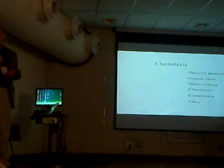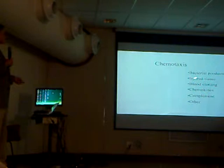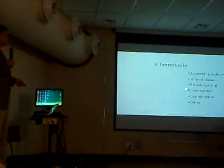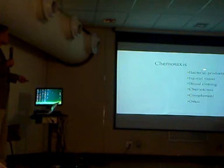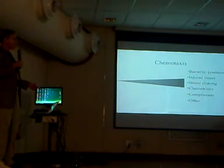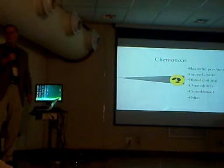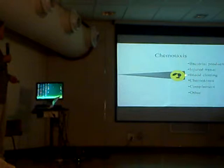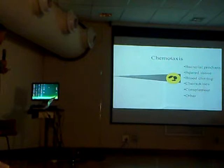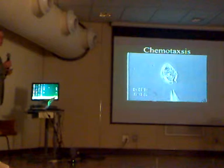Once leukocytes exit the vessel, they need to know where to go — a process called chemotaxis. At a site of infection, bacterial products, tissue injury, blood clotting, and activated complement all generate inflammatory mediators. These diffuse away from the site, with the highest concentration at the problem area decreasing with distance. Leukocytes can detect this gradient by comparing receptor engagement on their front half versus their back half, and will migrate toward higher concentration.